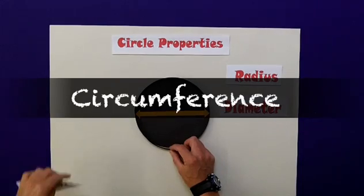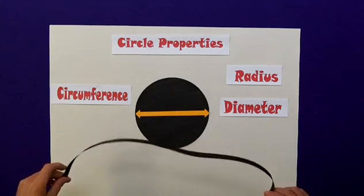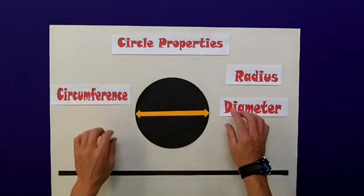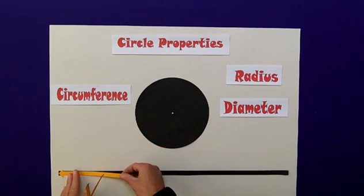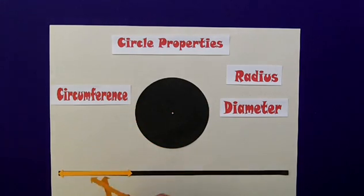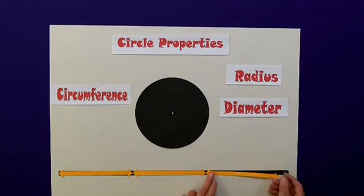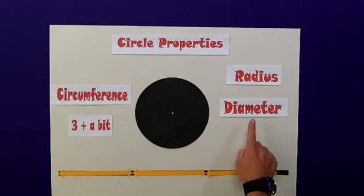The circumference of any circle is the distance around its outside edge. And in fact, the relationship between the circumference and the diameter is that the circumference is approximately three times the diameter. So three and a bit, and it's always that case with any circle, its circumference is three and a bit times bigger than its diameter.